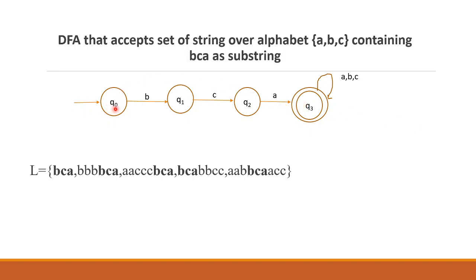Now let's define transitions for Q0. For every state, there must be transitions from every input symbol. Q0 has a transition on B going to Q1. Q0 also needs transitions on A and C, which will loop back to Q0.